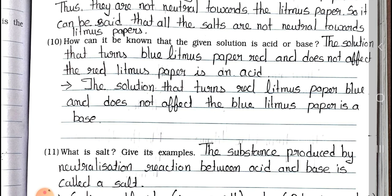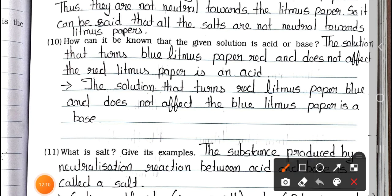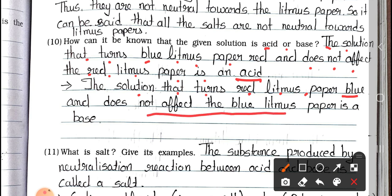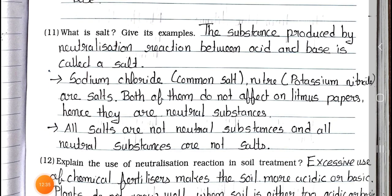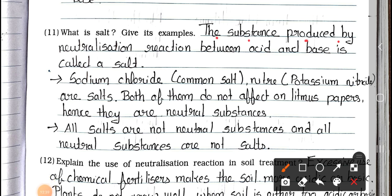Question number 10: How can it be known that the given solution is acid or base? Answer: The solution that turns blue litmus paper red and does not affect the red litmus paper is an acid. The solution that turns red litmus paper blue and does not affect the blue litmus paper is a base. Question 11: What is salt? Give its example. Answer: The substance produced by neutralization reaction between acid and base is called a salt. Sodium chloride, common salt, potassium nitrate are salts. Both do not affect litmus papers, hence they are neutral substances.